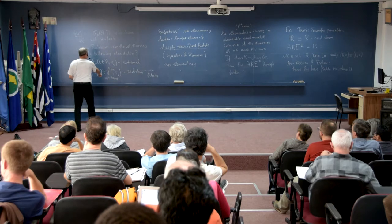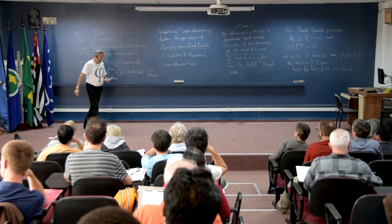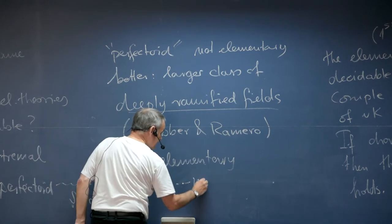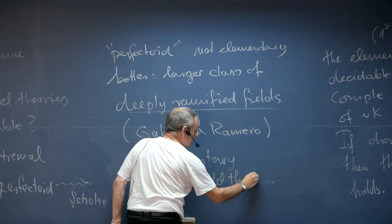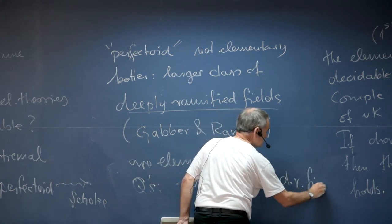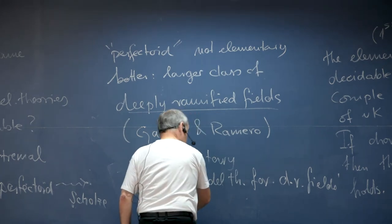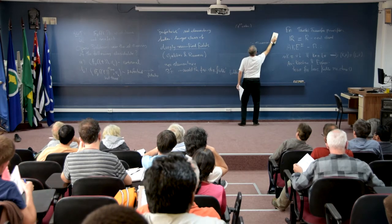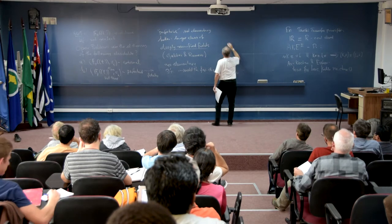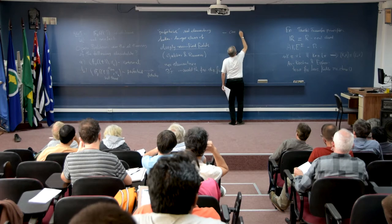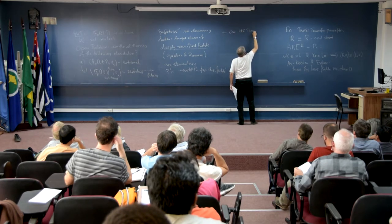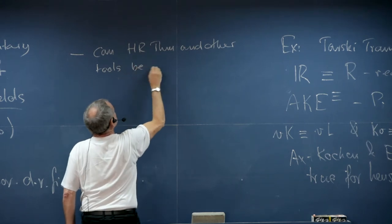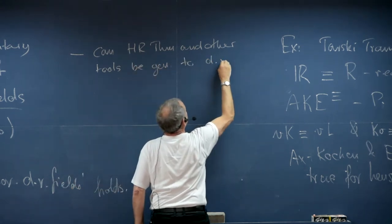A better, larger class is the so-called deeply ramified fields, discussed in the book of Gabber and Romero with its funny title 'Almost Ring Theory.' These are indeed elementary. Questions for future research: is there a good model theory for deeply ramified fields? And can the Hanselian rationality theorem and other tools we used be generalized to deeply ramified fields?